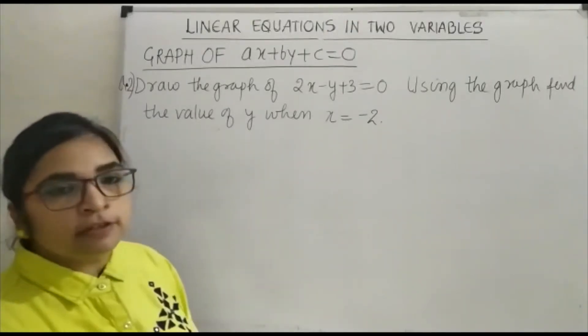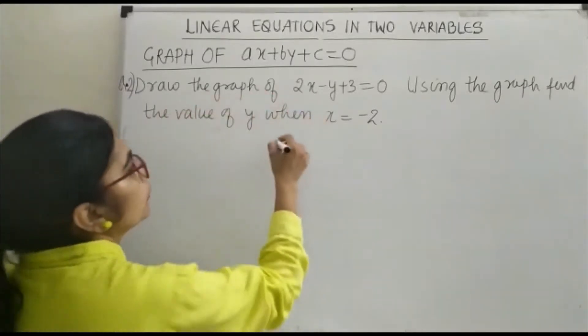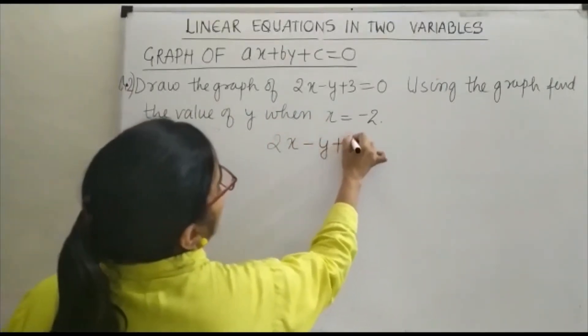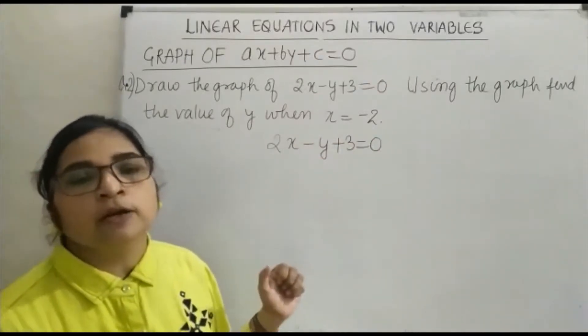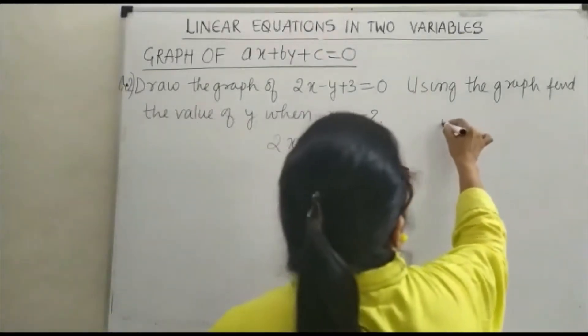Let us understand this by a simple equation. It is given that draw the graph of 2x minus y plus 3 equals 0. In order to plot the graph we will find out the coordinates of the line.